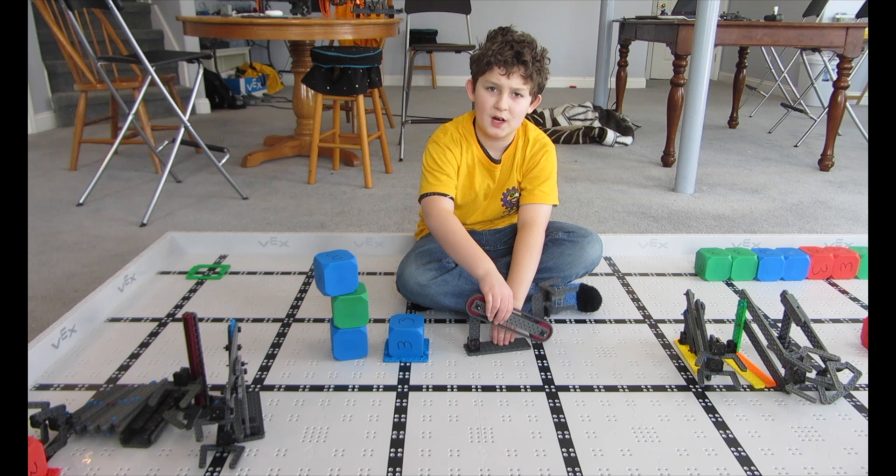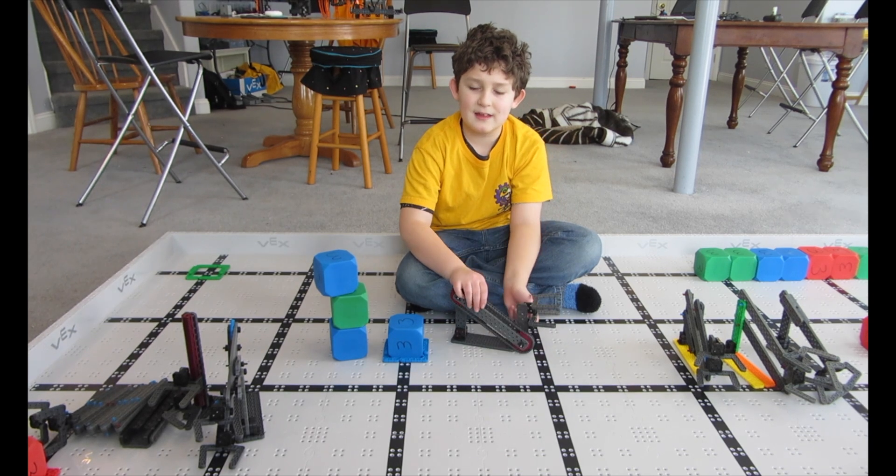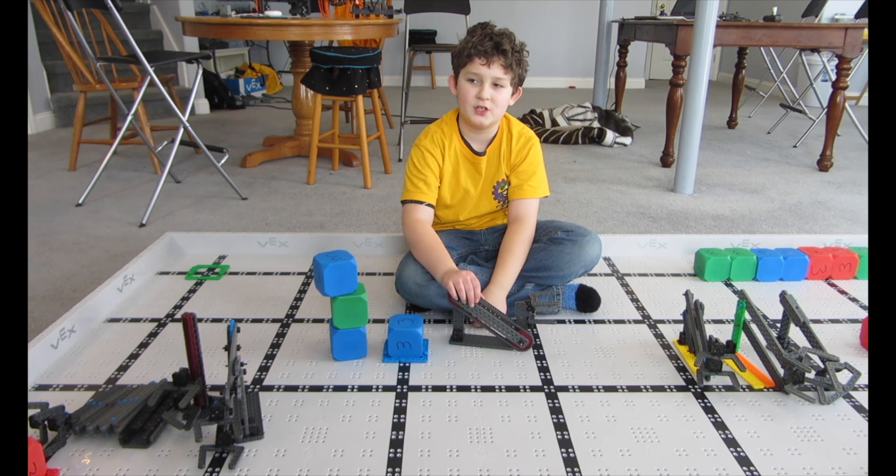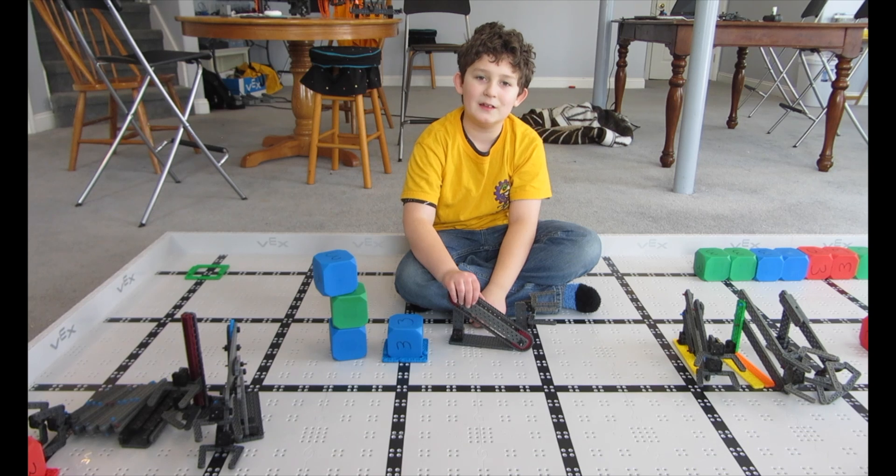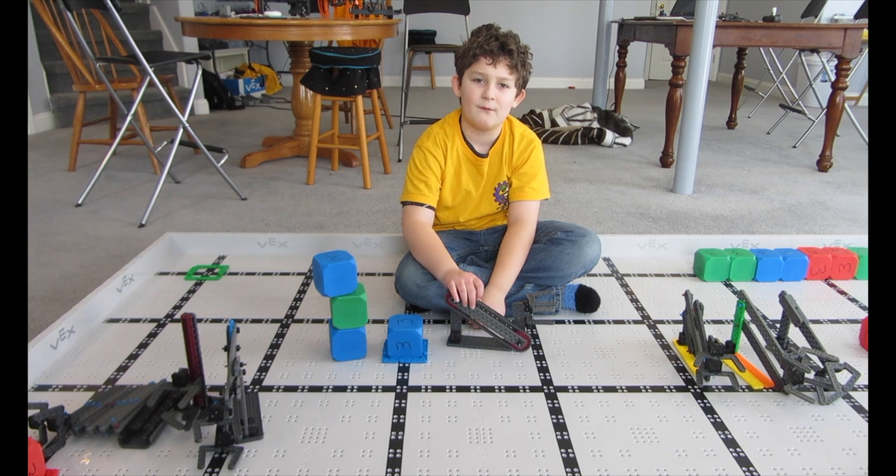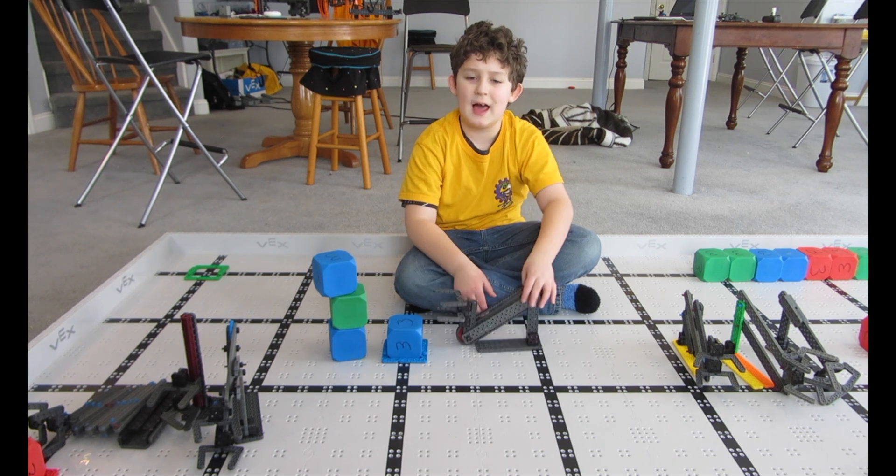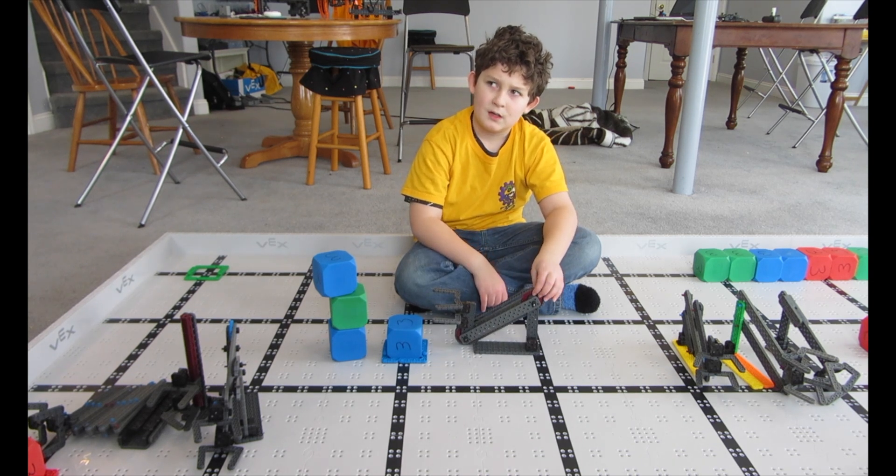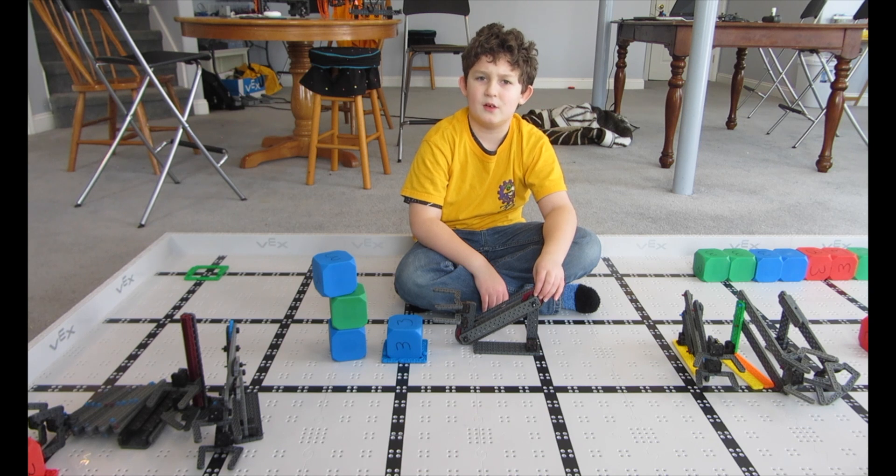This is number four, the virtual four bar linkage. It's a lot like the four bar linkage except it can go a little bit higher and it has a chain instead of some bars. It's a lot more compact than the four bar and it's pretty easy to build.